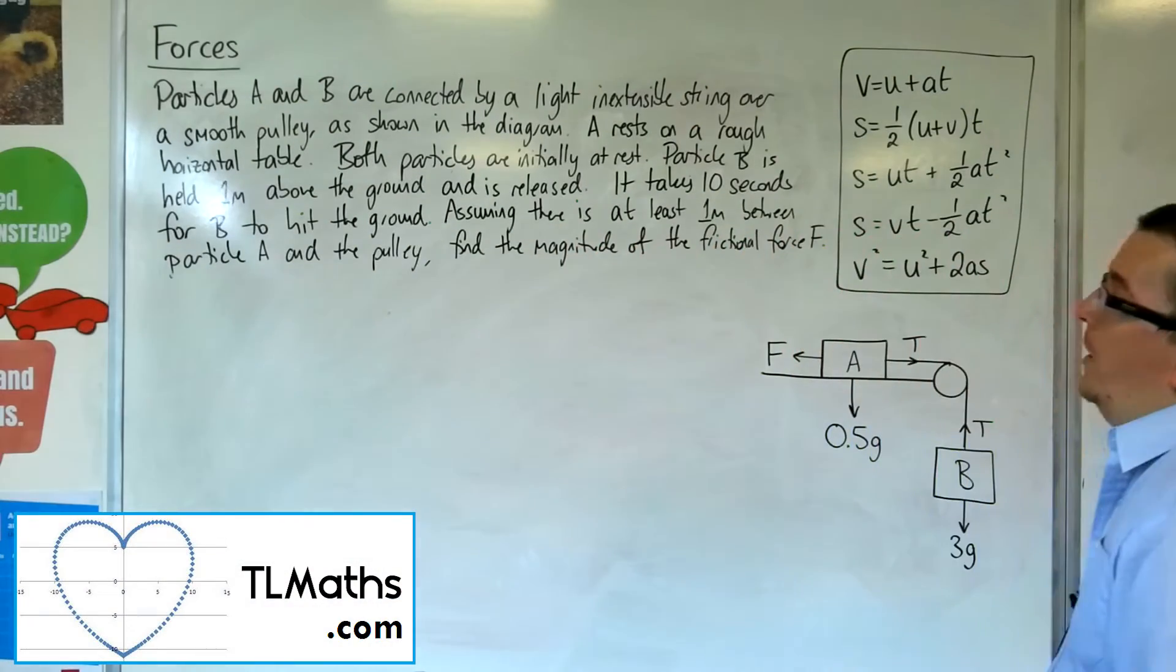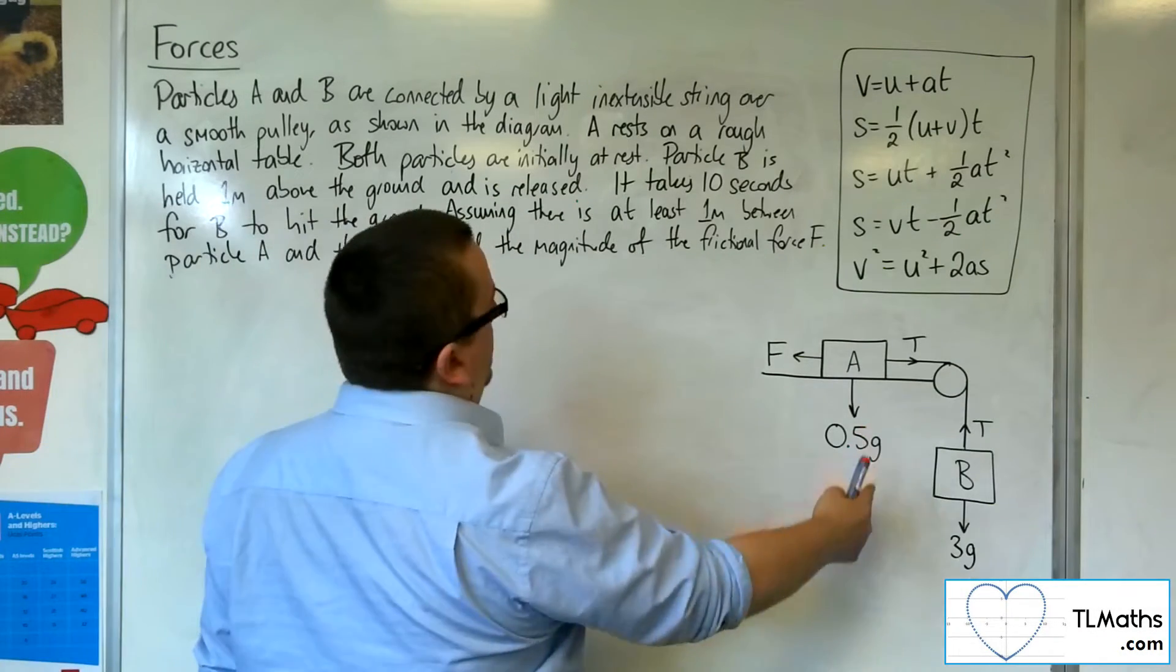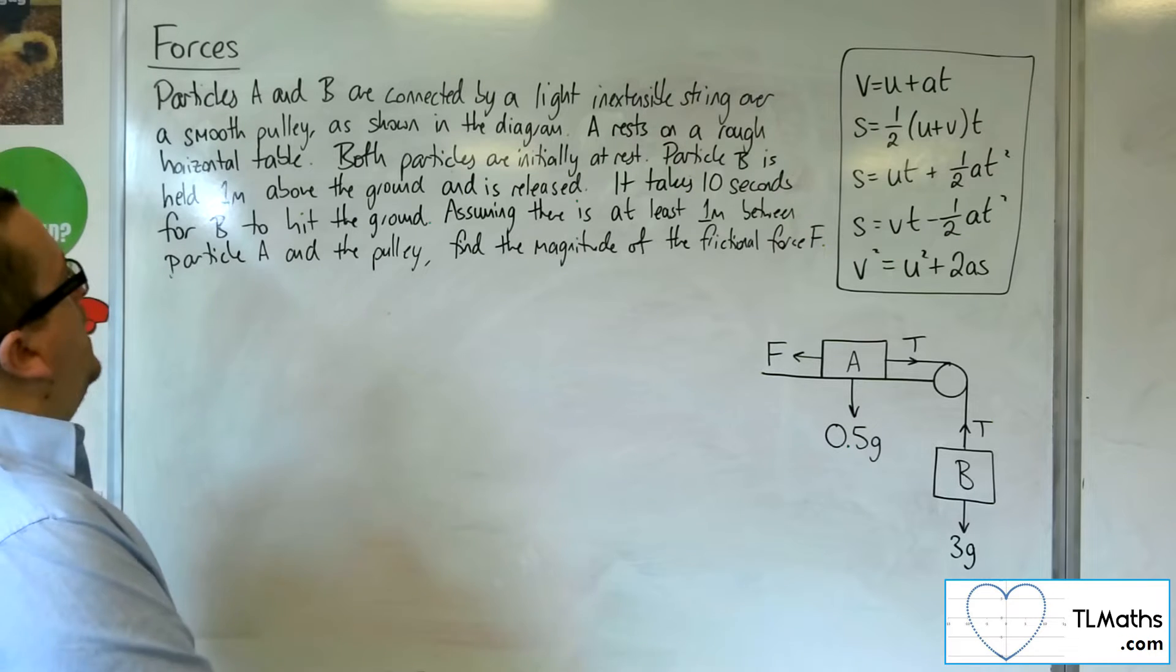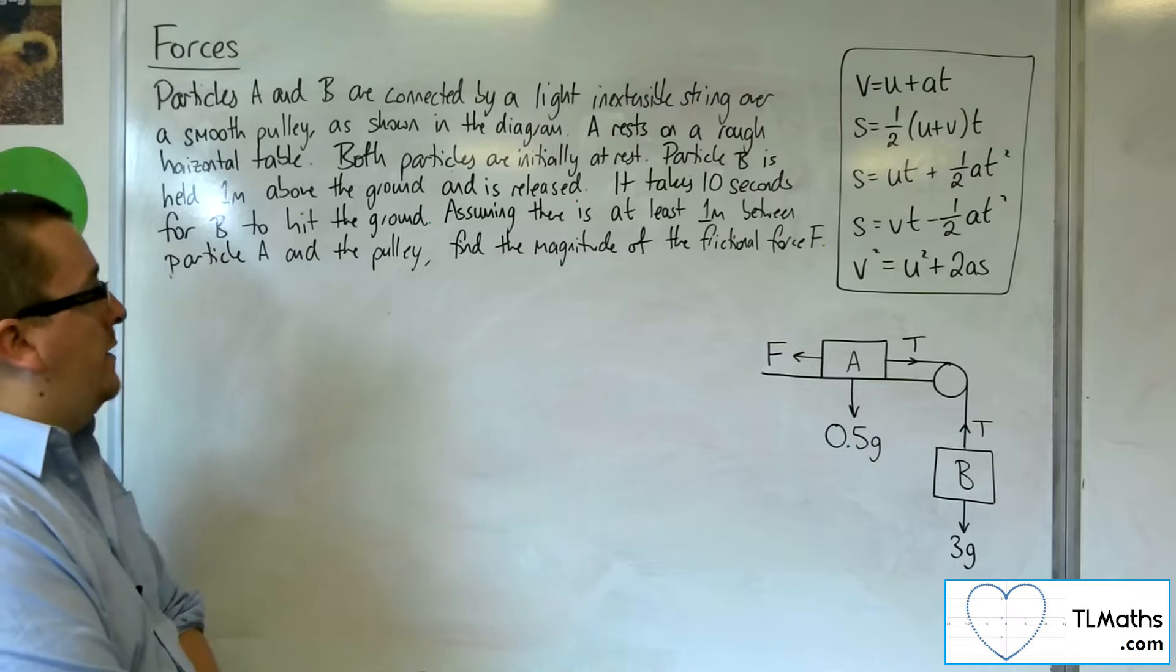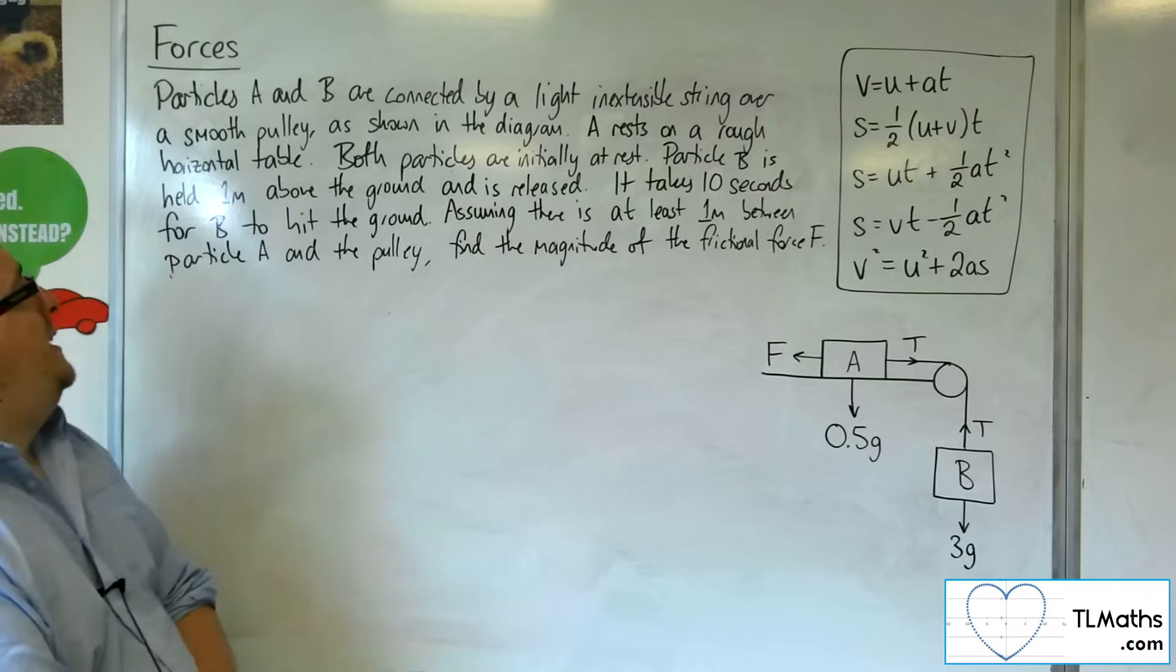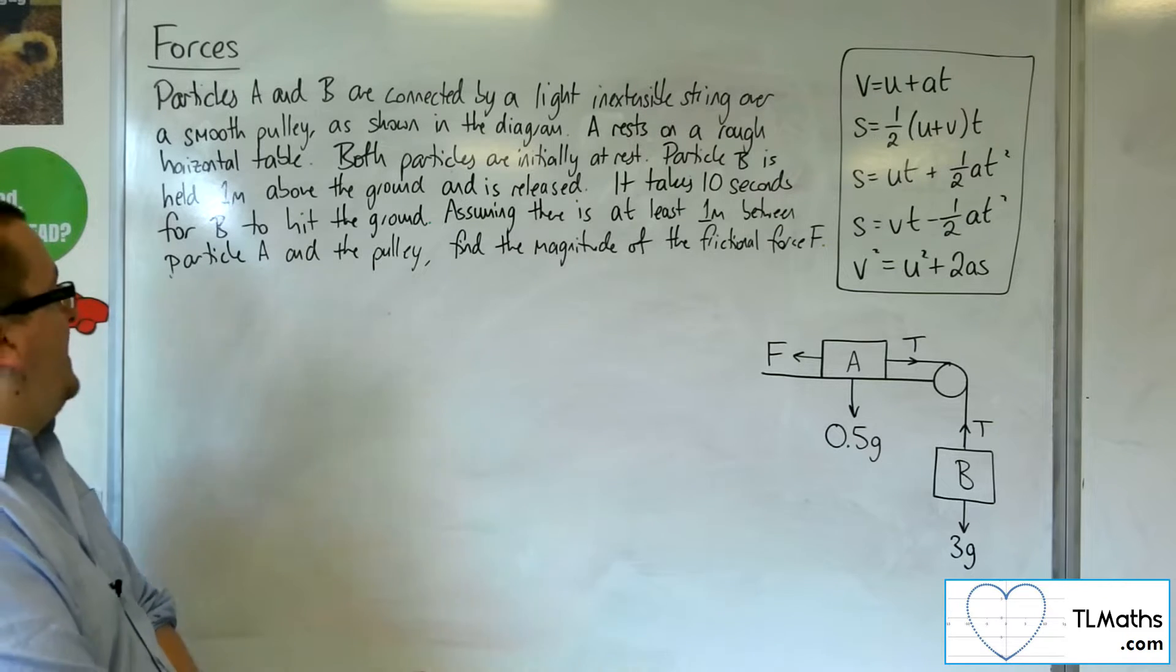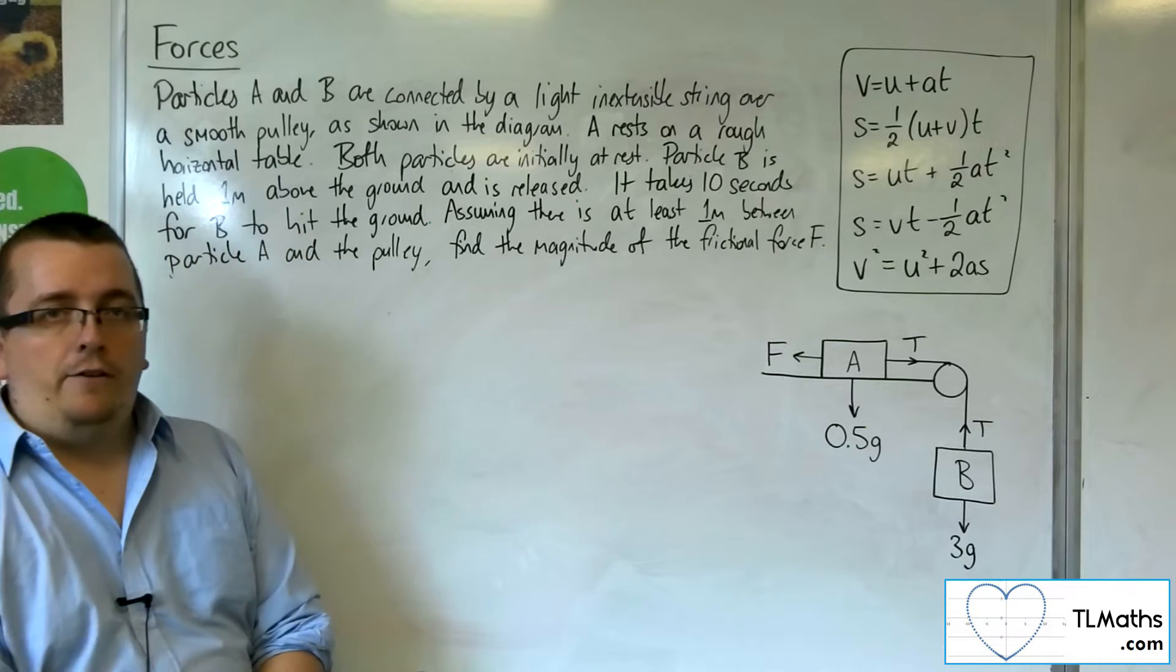In this video, we've got particles A and B connected by a light, inextensible string over a smooth pulley, as shown in the diagram. A rests on a rough horizontal table. Both particles are initially at rest. Particle B is held one metre above the ground and is released. It takes ten seconds for B to hit the ground. Assuming there is at least one metre between particle A and the pulley, find the magnitude of the frictional force F.